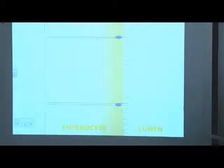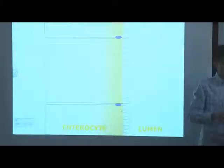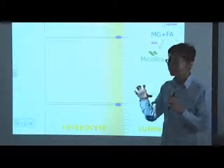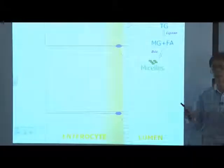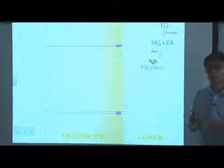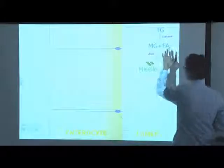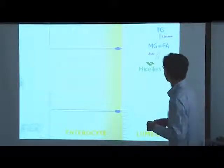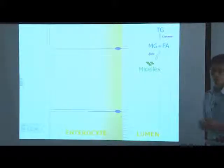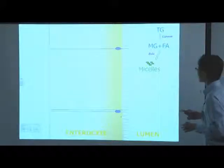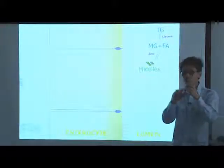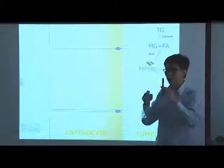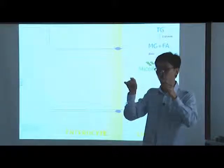Most of our dietary fat consists of triglycerides, so I focus on triglycerides. Triglycerides are basically a glycerol attached to three fatty acids. In the presence of lipase — particularly pancreatic lipase, along with gastric lipase and lingual lipase — triglycerides are partially digested in the upper digestive system. Most digestion occurs in the proximal small intestine, done by pancreatic lipase, which digests triglycerides into monoacylglycerols and two fatty acids.